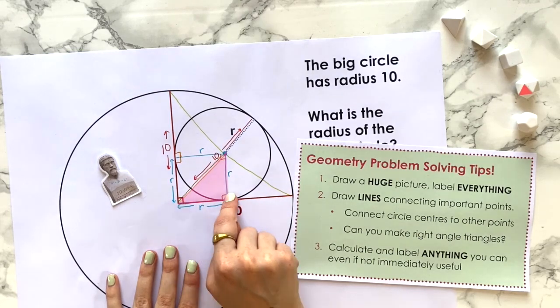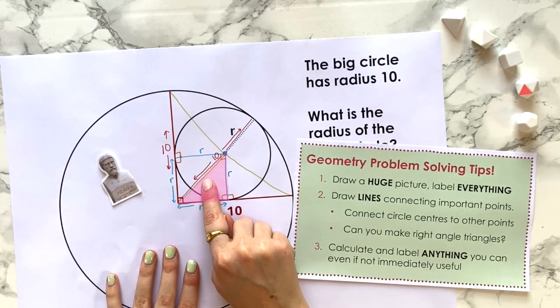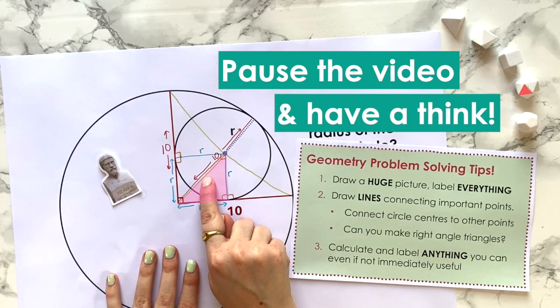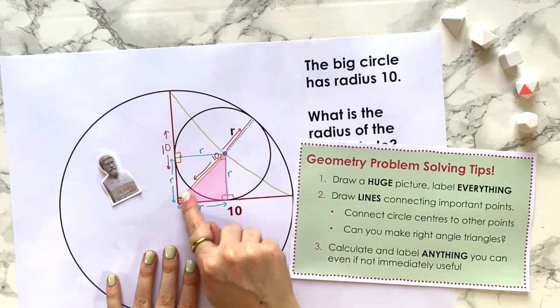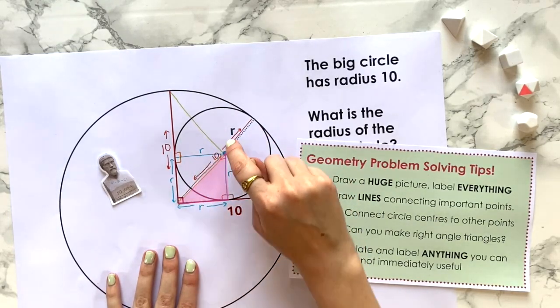Take a moment to see if you can think what that is. We've labeled on this radius here of the big circle, and that's 10, so we know this length.